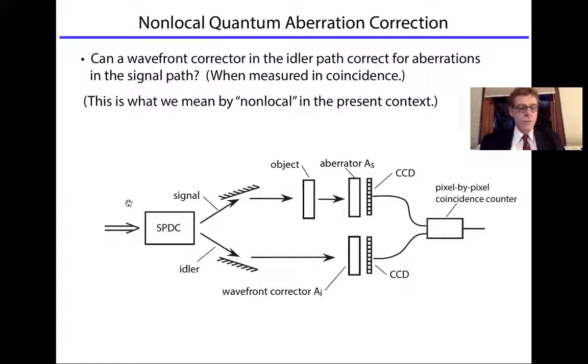Here's conceptually, and it's actually pretty close to the actual experiment, how this would work. A laser beam excites parametric down conversion. One photon is a signal, the other is the idler photon. The signal photon passes through an object, but then through some aberration, is not a good optical imaging system, and the CCD camera measures this aberrated image. Over in the idler part, the question is, can I put, if I think I know the nature of this aberration, can I put the conjugate of that aberration here to correct for the image when measured in coincidence?